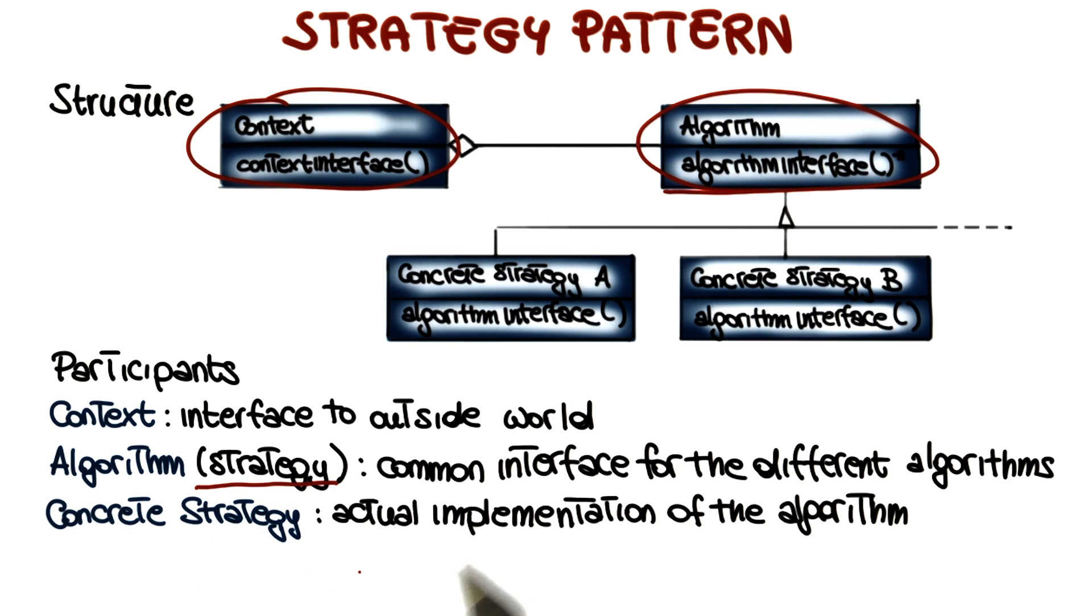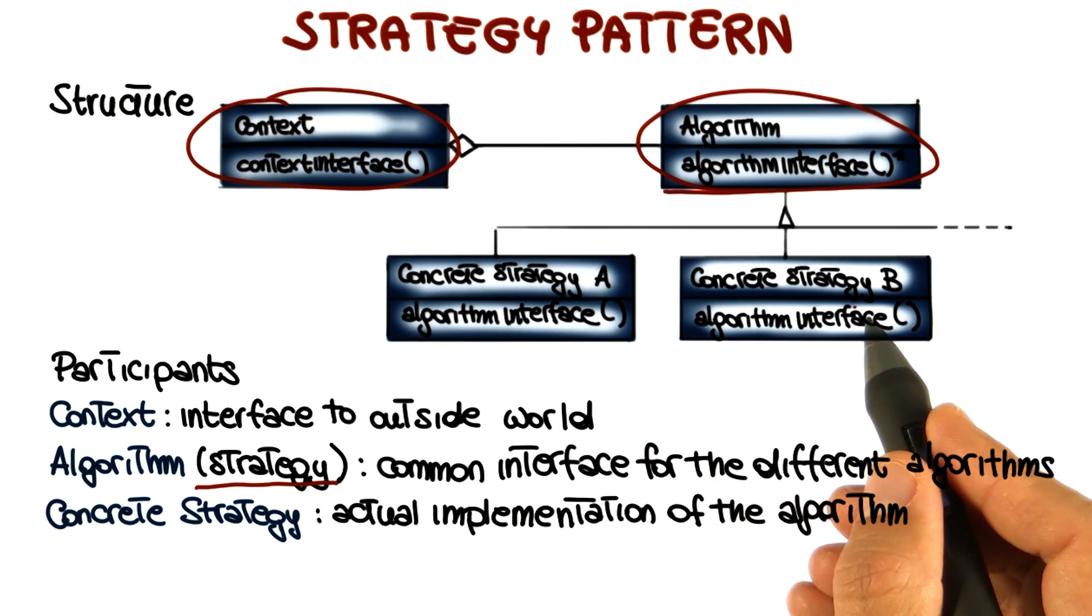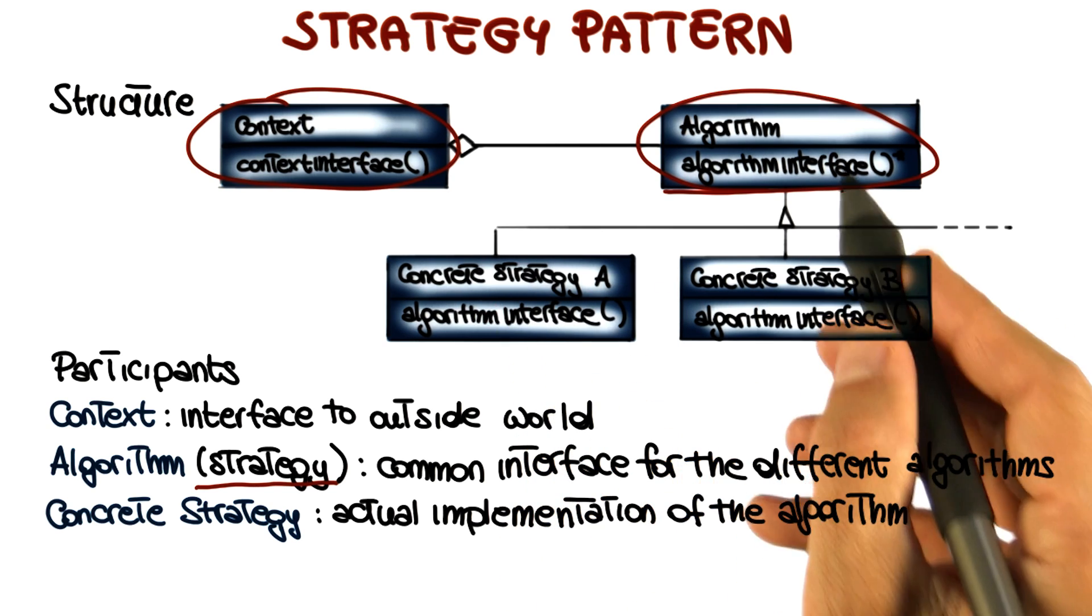Finally, the concrete strategies are the actual implementations of the algorithms. So if I have ten different variants of my algorithm, I will implement ten different concrete strategies. They will all be implementations of this interface.